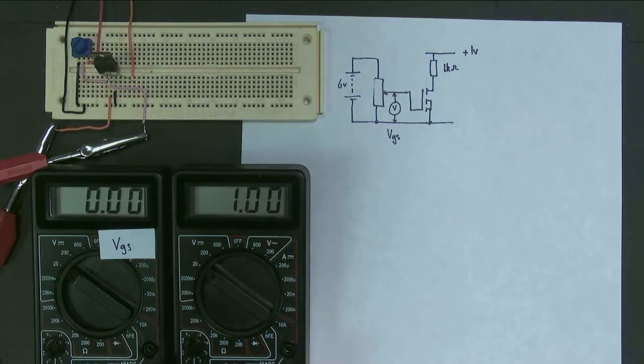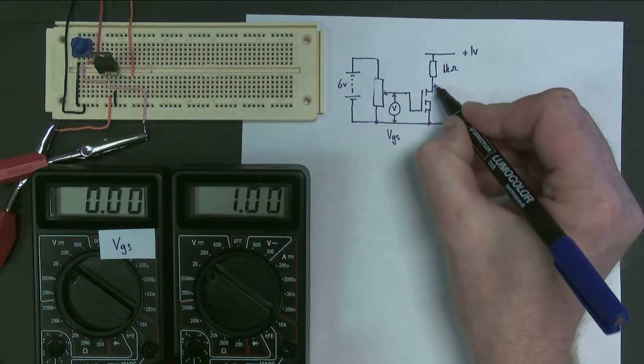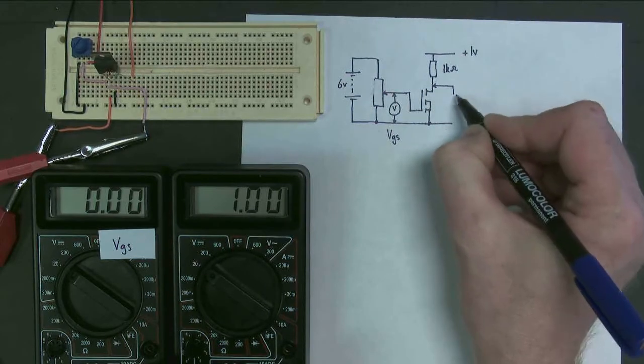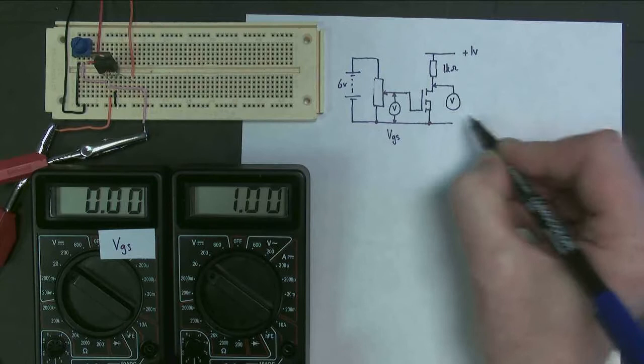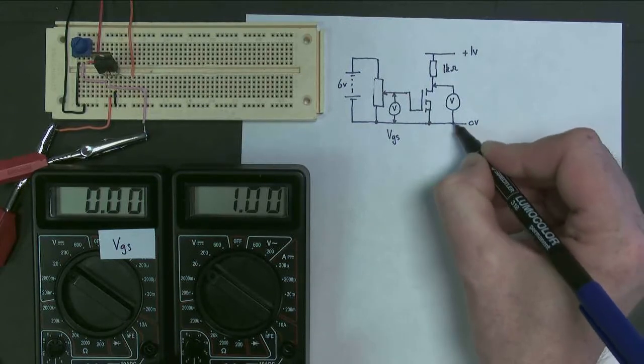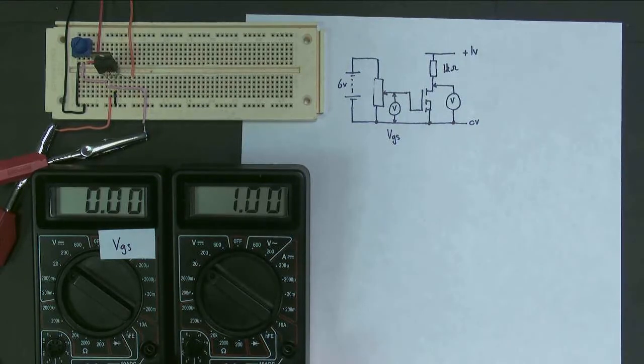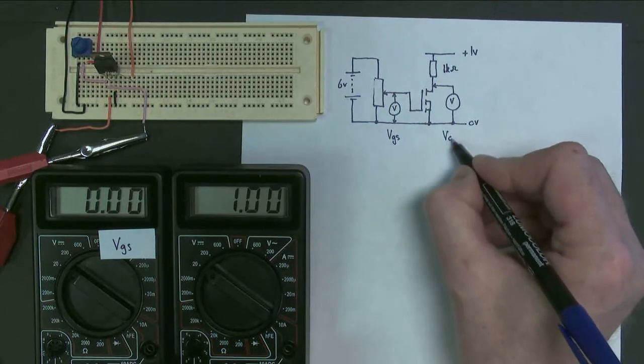And we've got another voltmeter here, which is going to measure the voltage across the MOSFET. This is looking remarkably like all our other circuits. But in this case, this is going to be labeled Vout.